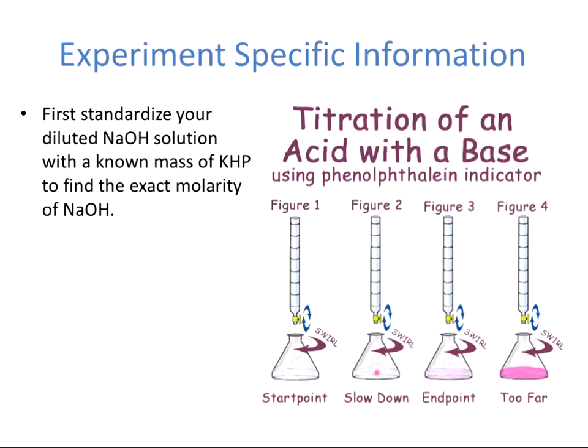Here is some information specific to this experiment. We want to standardize our diluted sodium hydroxide solution with a known mass of KHP to find the exact molarity of the sodium hydroxide. Sodium hydroxide comes as solid pellets that absorb water from the air, making it hard to determine its mass accurately. KHP — potassium hydrogen phthalate — is a good primary standard that can be weighed accurately. Knowing it is a monoprotic acid, we can find the number of moles in our sodium hydroxide solution.